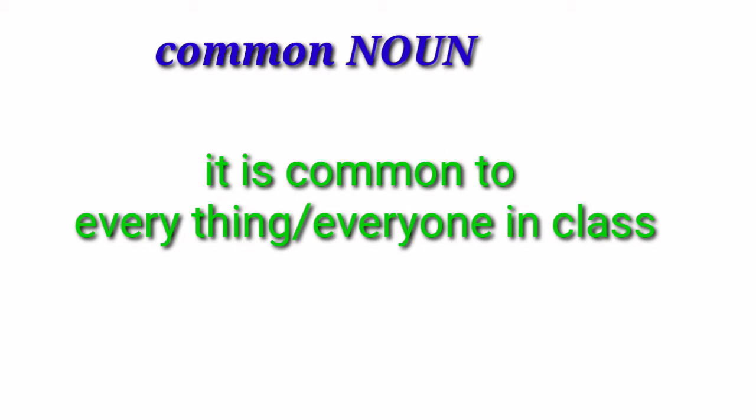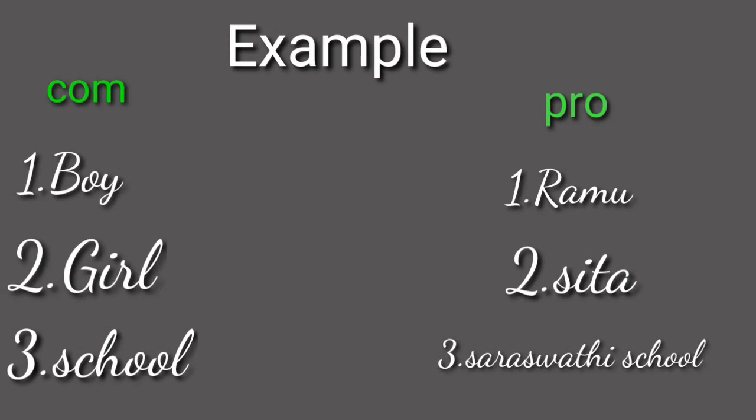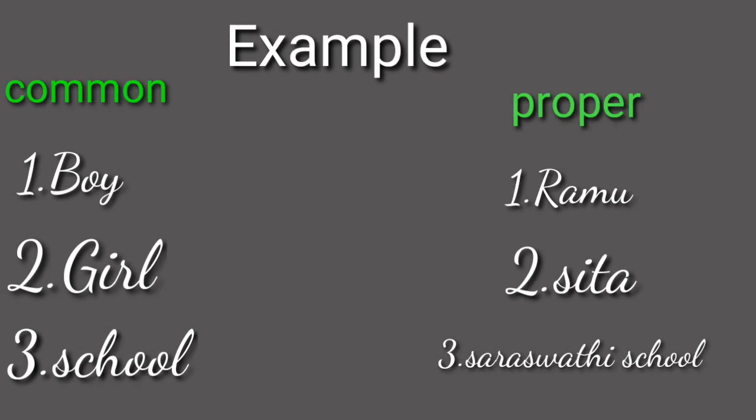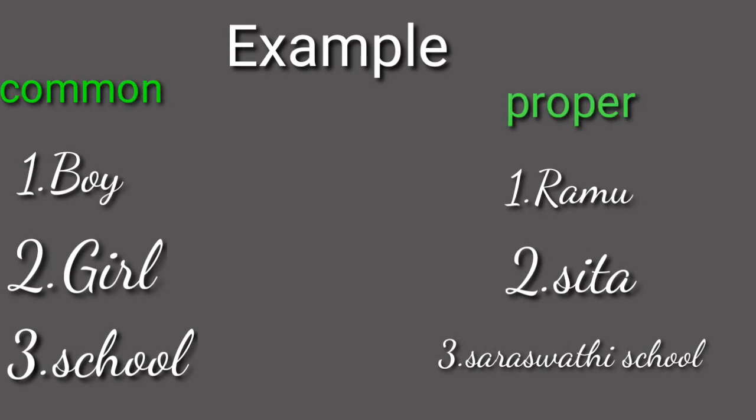For example, 'boy' is a common noun — it is common to everyone in the class. But a particular name like 'Ramu' is a proper noun. Any specific name given to a boy is said to be proper.